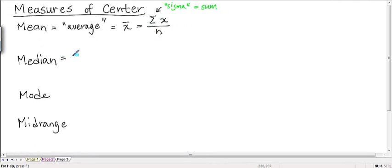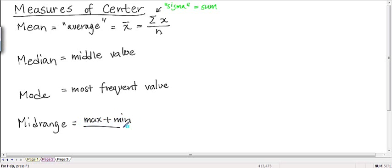The median is the middle value. So if you have an odd number of values, it is the middle value. If you have an even number of values, it is the average of the two middle values. The mode is the most frequent number, the most frequent value. And the midrange is the maximum plus the minimum divided by two. The midrange is not used that often, but we'll still talk about it.